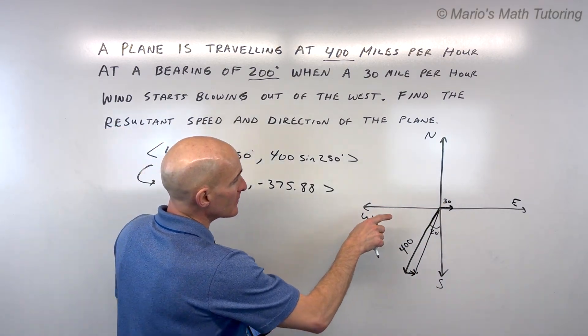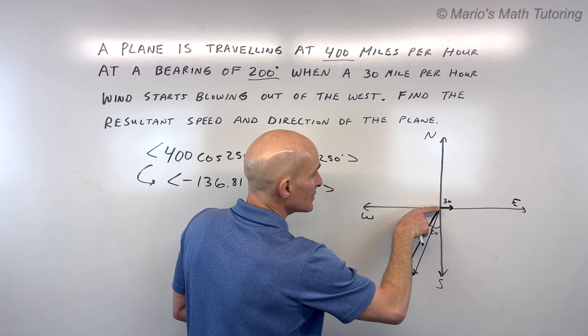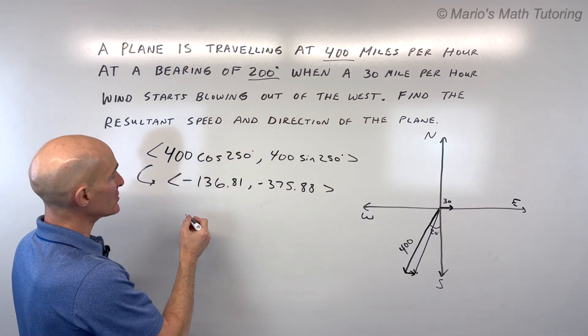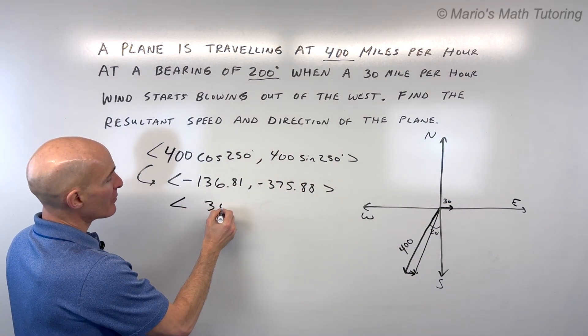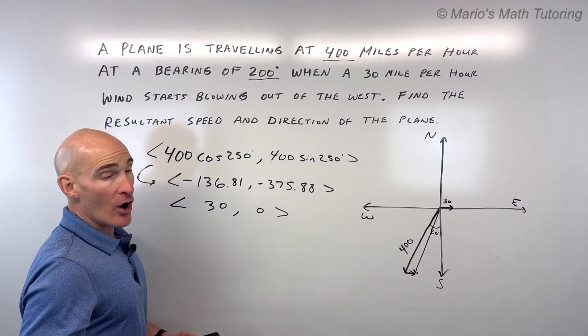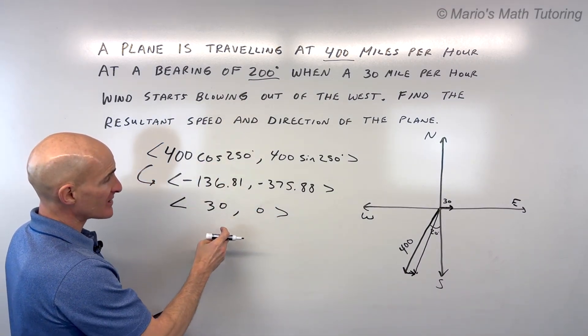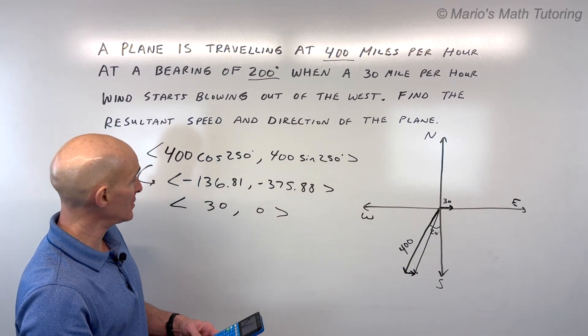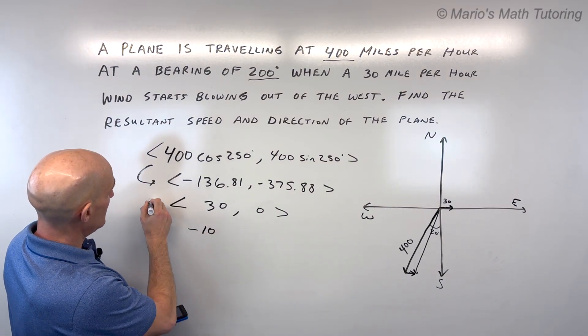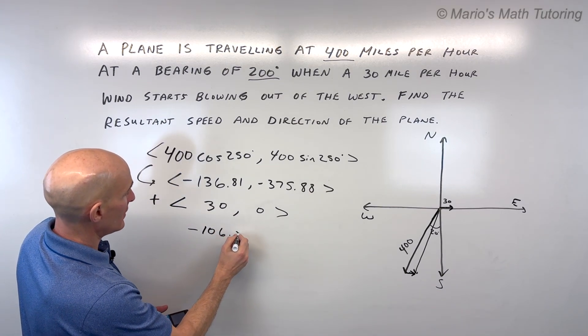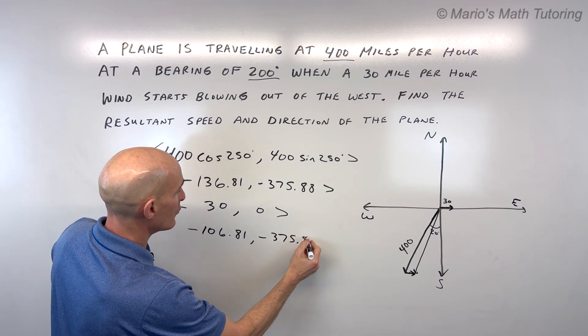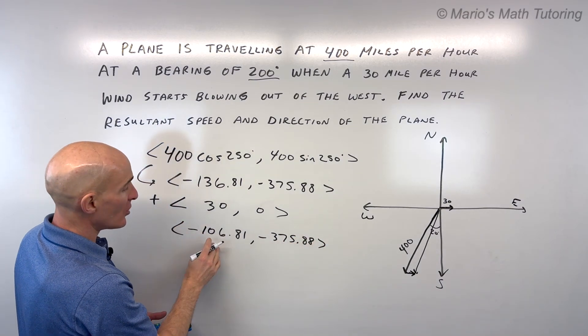Now for the wind, we're just going this direction here to the right. There's not a vertical component, just this horizontal component of 30. So that vector is just going to be 30 in the X direction, 0 in the Y direction. We're going to add these two vectors together, the X components and the Y components. So let's go ahead and do that. So that's going to be negative 106.81 comma anything plus zero is itself, negative 375.88. So this is our resultant vector.